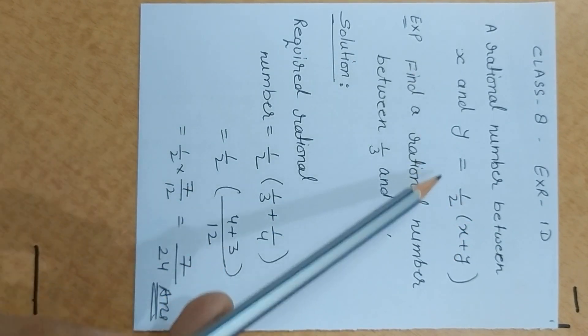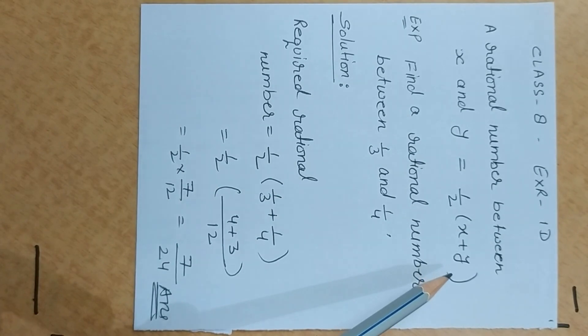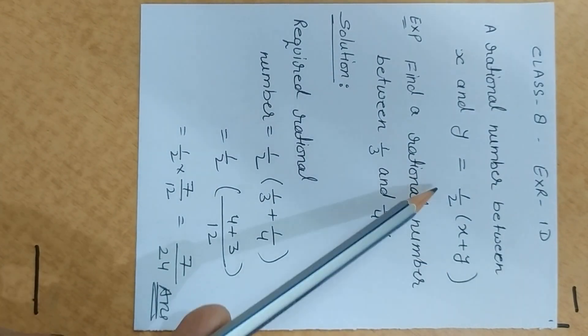Rational number between x and y is equal to 1 upon 2 times x plus y, means simply add 2 numbers and both halves. 1 by 2 divide.